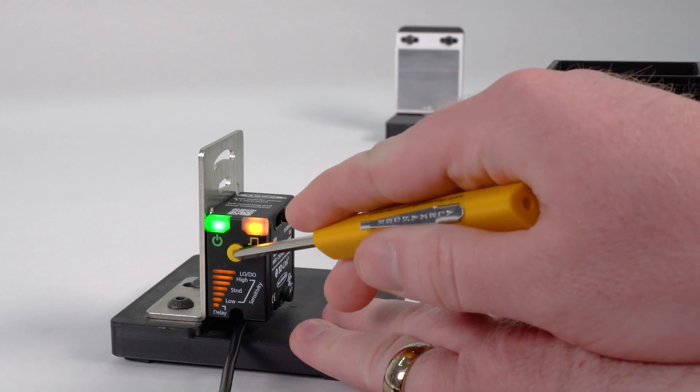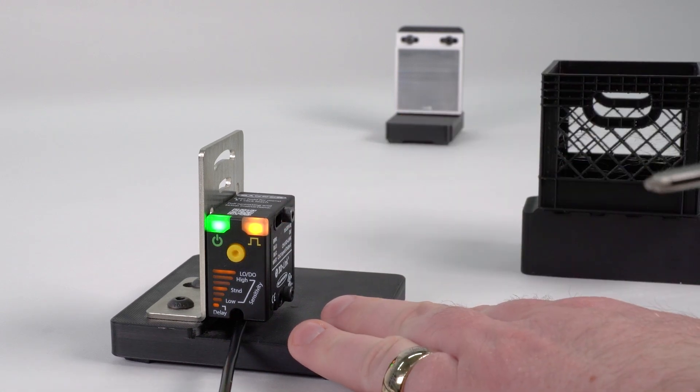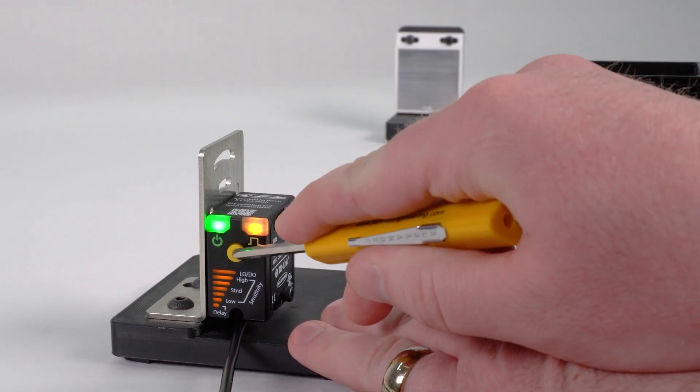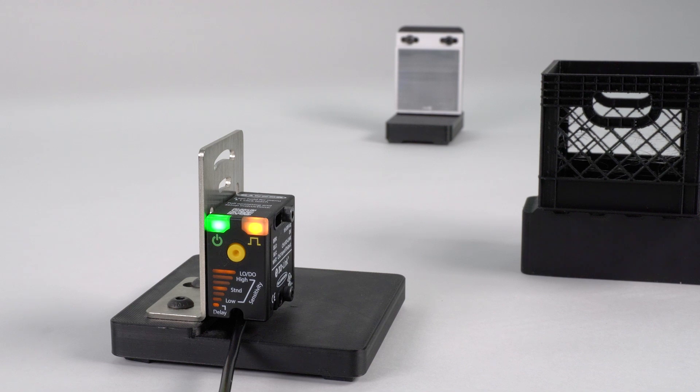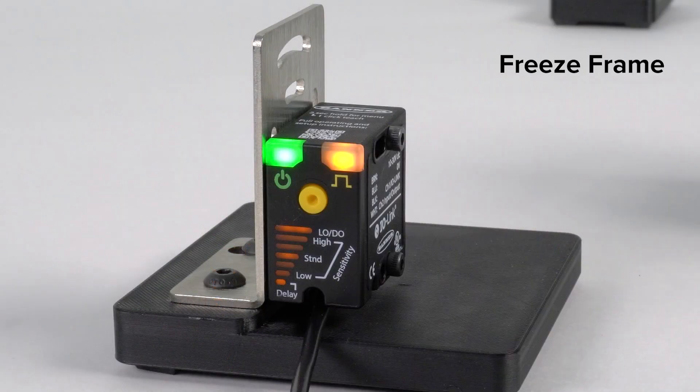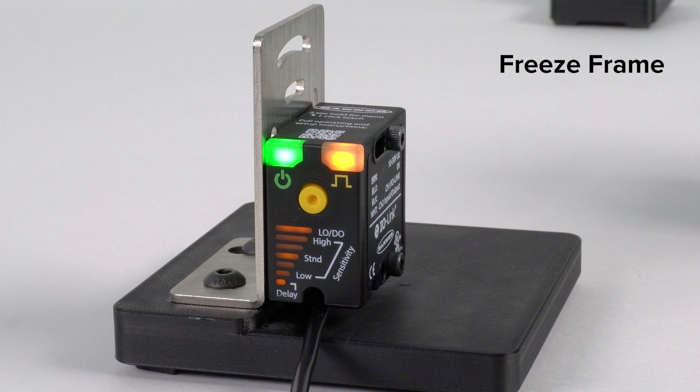If you wish to confirm all of the configuration selections, you can do so right on the B25 itself by pressing the button one time. The corresponding LEDs will illuminate for a moment to show the status of each configuration option.